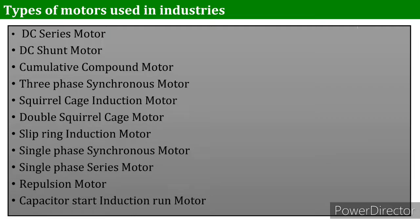The fourth type is the three-phase synchronous motor. Its important characteristic is that its speed remains constant under various loads. It is used for driving continuously operating equipment at constant speed, such as air compressors, motor-generator sets, and continuous rolling mills.